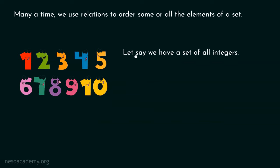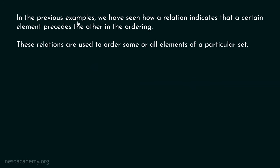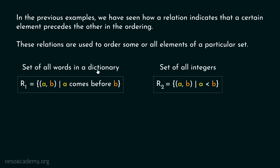Let's see one more example. Let's say we have a set of all integers, and we have a relation R which consists of all ordered pairs A comma B such that A is less than B. If you closely observe this relation, you can find that it is also helping us in ordering all integers — forming the sequence of integers where the first integer is less than the second, and the second integer is less than the third, and so on. In the previous examples, we have seen how a relation indicates that a certain element precedes the other in the ordering. These relations are used to order some or all elements of a particular set.